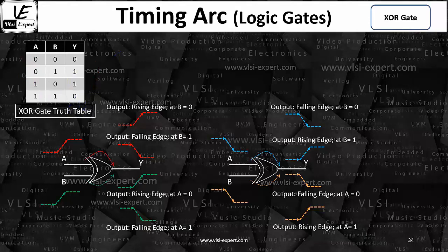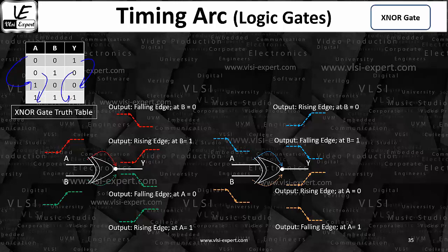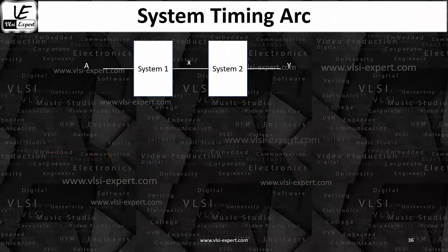In such cases where you cannot categorize as a positive unit or a negative unit, we say this is a non-unit circuit. Similarly for the XNOR gate — the same case. If you apply a positive pulse, from the truth table: going 0 to 1 gives 1 to 0, 0 to 1 gives 0 to 1. So the XNOR case is also a non-unit.